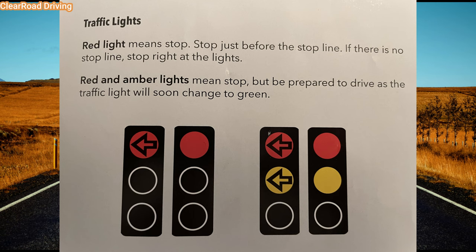First, red lights. If the light is red, you must stop just before the stop line. If there is no stop line, stop right at the traffic lights. Almost always you will have a solid white stop line. The exception where you will not have a stop line is if the light is a temporary traffic light, in which case they just put the temporary traffic lights but will not mark the road with a stop line.